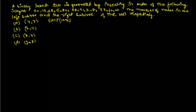This question was asked in GATE 1996. A binary search tree is generated by inserting in order the following integers: 50, 15, 62, 5, 20, 58, 91, 3, 8, 37, 60, and 24. They are asking what are the number of nodes in the left subtree and the right subtree of the root.